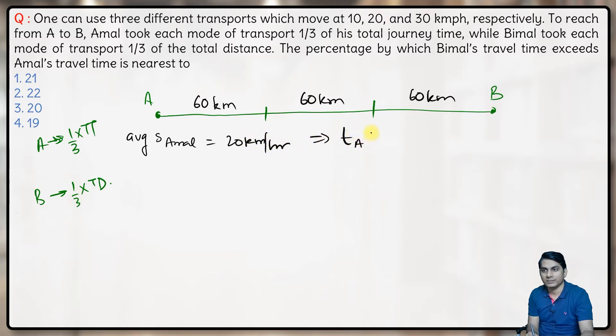That means time taken by Amal will be 180 kilometers divided by the average speed, which is 20. So this comes out to be 9 hours.